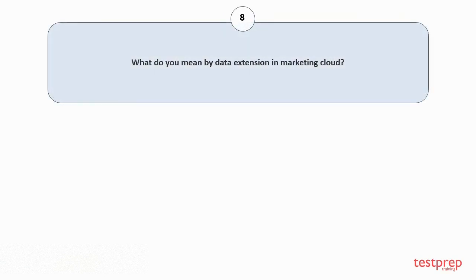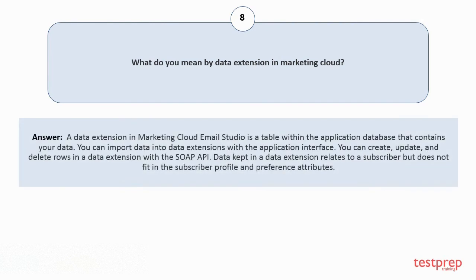Question number eight: What do you mean by data extension in Marketing Cloud? A data extension in Marketing Cloud Email Studio is a table within the application database that contains your data. You can import data into data extensions with the application interface, and you can create, update, and delete rows in a data extension with the SOAP API. Data kept in a data extension relates to a subscriber but does not fit in the subscriber profile and preference attributes.